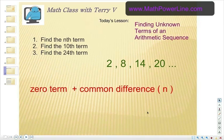So in this example I want you to find the nth term, the 10th term, and the 24th term of the sequence you can see in green there. We've got 2, 8, 14, 20, and so on forever.